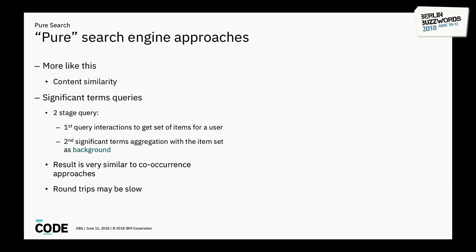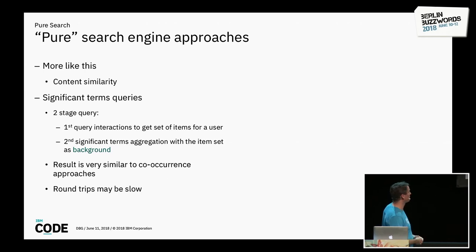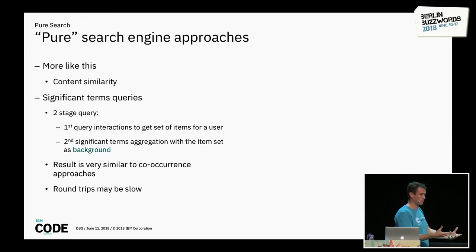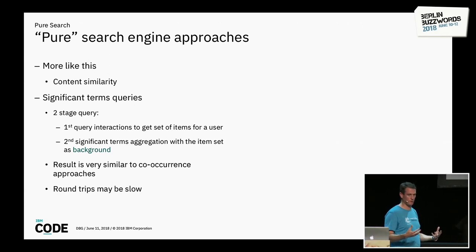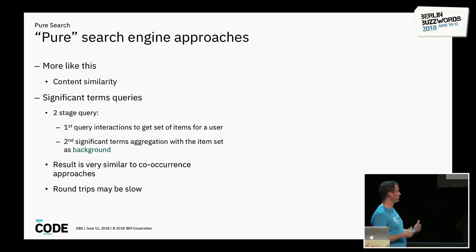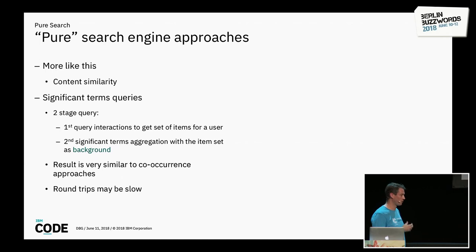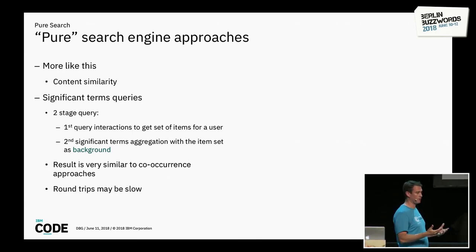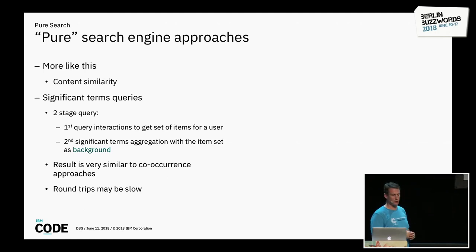Two additional pure search approaches are worth noting. For content similarity, built-in 'more like this' queries work well as a fallback. Significant terms queries offer a two-stage approach: first retrieve items a user has recently interacted with, then use a significant terms aggregation to surface interesting co-occurrences — a slightly different algorithmic approach to co-occurrence that requires no pre-computation, though it may be slower.